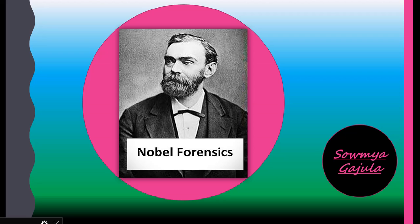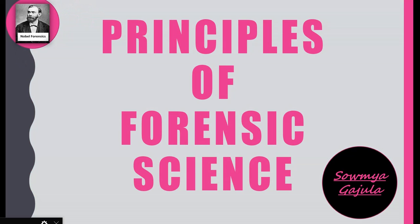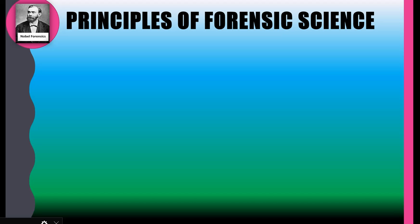Hello everyone, welcome to Noble Forensics. I am Soumya Gajula. Here I am discussing about the principles of forensic science. There are a few basic principles in forensic science which help in forensic crime investigation — while collecting evidences, during analysis of evidences in the laboratory, while reconstructing the events of crime and also for identifying the perpetrators, these principles will definitely help.